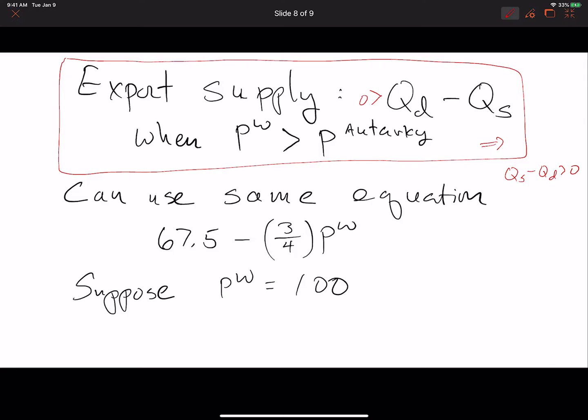Let's suppose that the price equal to 100. If we do that, you're going to see that this value is going to be negative. The amount that is going to be demanded is going to be less than the amount that is going to be supplied. In other words, you export.